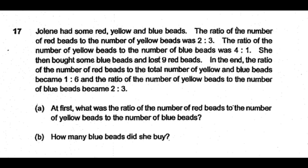Jolene had some red, yellow and blue beads. The ratio of the number of red beads to the number of yellow beads was 2:3. The ratio of the number of yellow beads to the number of blue beads was 4:1. She then bought some blue beads and lost 9 red beads. In the end, the ratio of the number of red beads to the total number of yellow and blue beads became 1:6, and the ratio of number of yellow beads to the number of blue beads became 2:3.